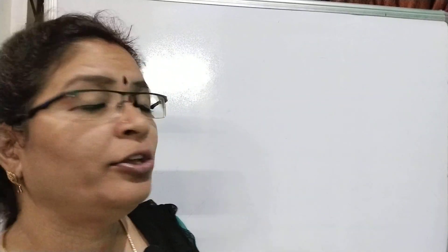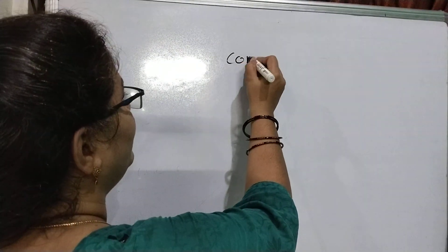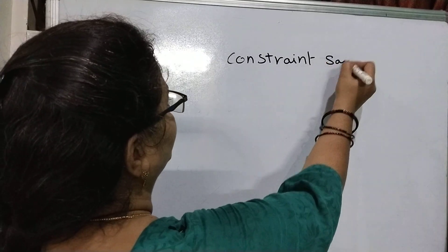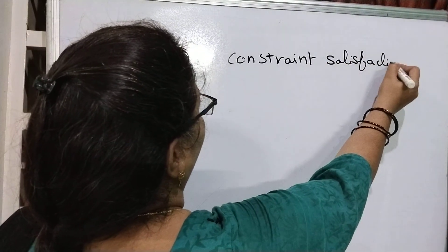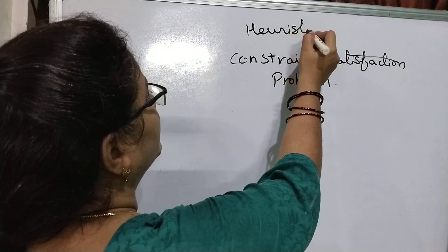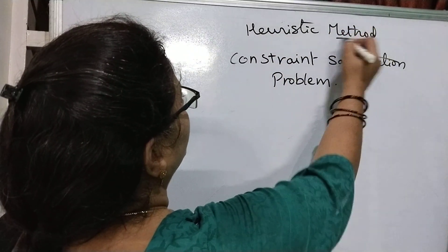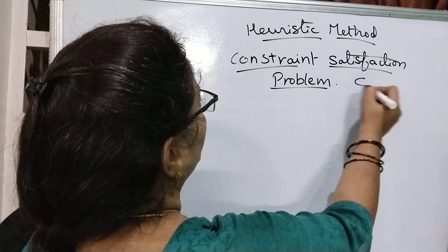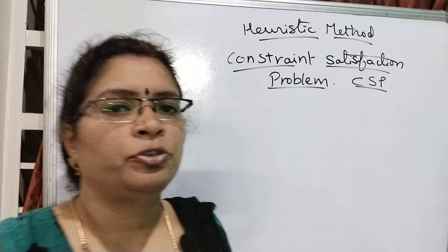Welcome to Intelligible Tutorials. In today's session, we are going to discuss one of the most widely used heuristic techniques. In previous sessions, I covered various kinds of heuristic techniques in artificial intelligence. Now we are going to discuss the most widely used one, called the Constraint Satisfaction Problem, or CSP — one of the most widely used heuristic methods.